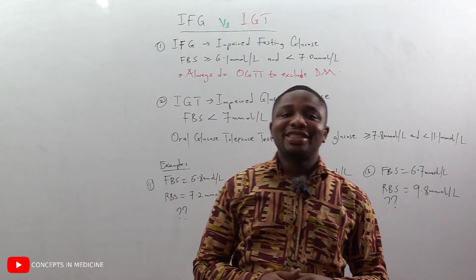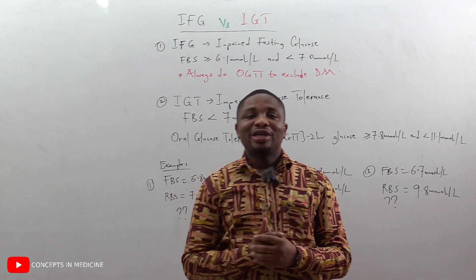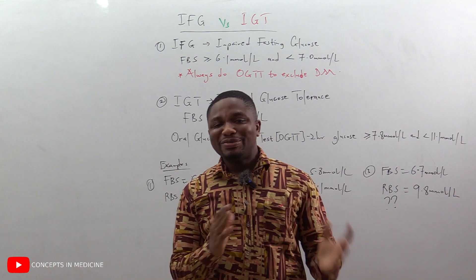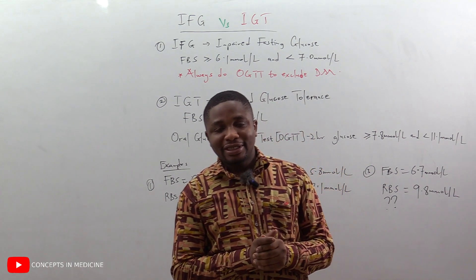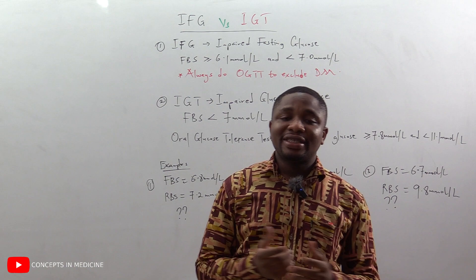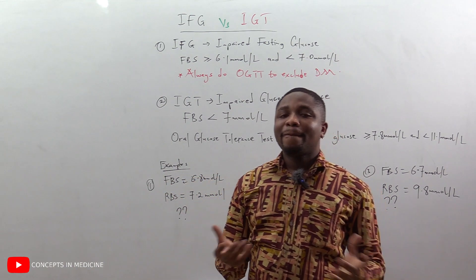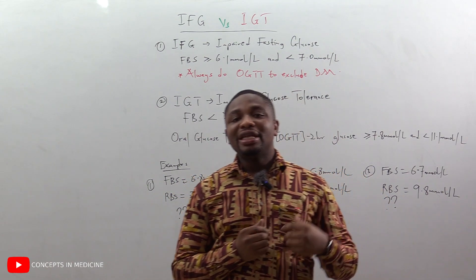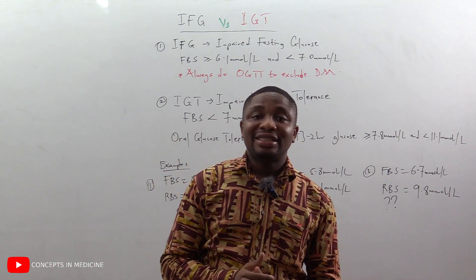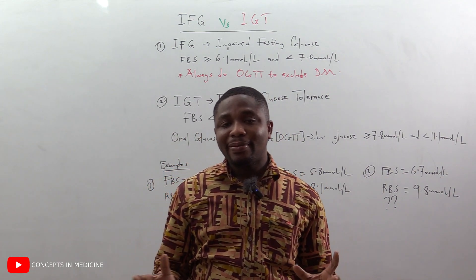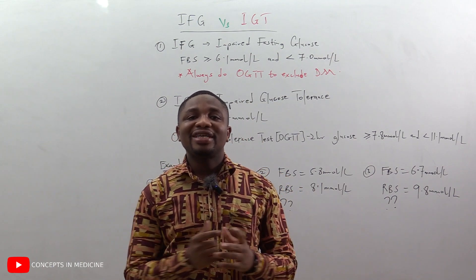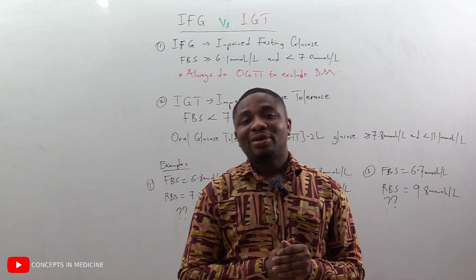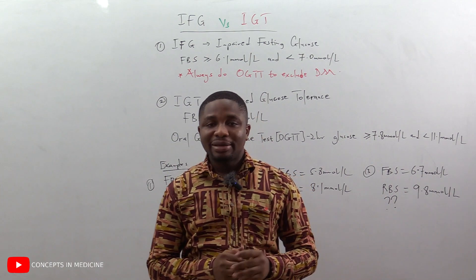Welcome to Concept in Medicine. Today we are going to be looking at impaired fasting glucose versus impaired glucose tolerance. For impaired fasting glucose — IFG — if you check the fasting blood sugar of a patient and it is greater than or equal to 6.1 mmol/L but less than 7.0 mmol/L, it falls in the zone of impaired fasting glucose. If that is the case, always make sure to do an oral glucose tolerance test to exclude diabetes mellitus.